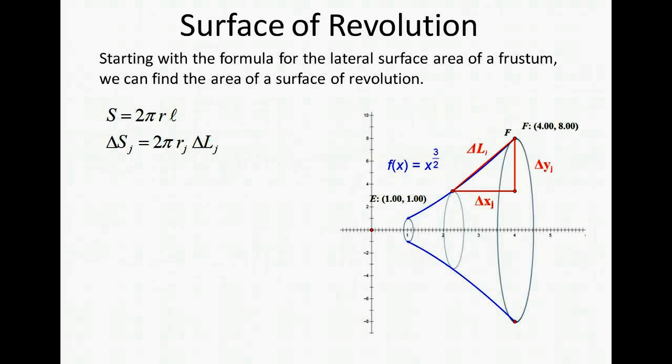Okay so starting with our basic formula for the surface area of frustum, 2πrℓ, we can find the surface area of the surface of revolution. So we're going to look for the change in the surface area. So we have 2πr times Δℓ gives us Δs.